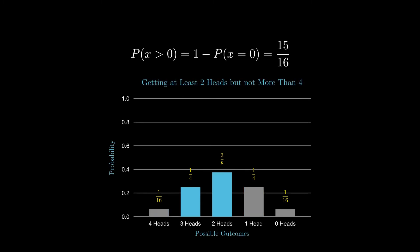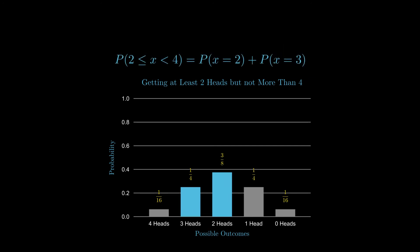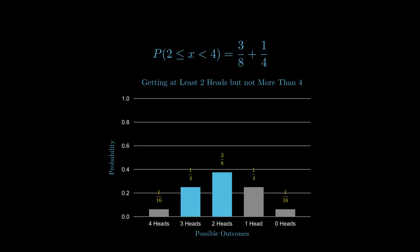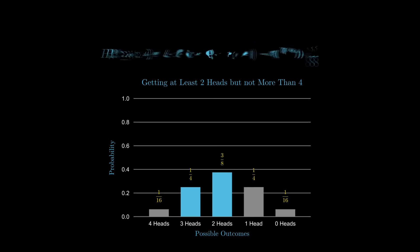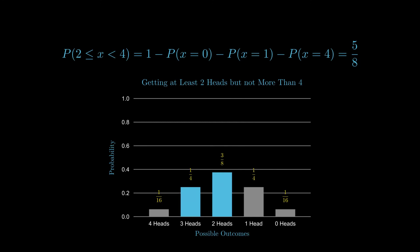You can use this to subtract and get the same result using complement probabilities. Here is an example of getting at least two heads but not more than four. Following the same approach, you add the blue bars — three-eighths plus one-fourth — which gives the probability of getting exactly two heads and three heads. By using its complement, the answer equals one minus the probability of getting no heads, one head, or four heads.